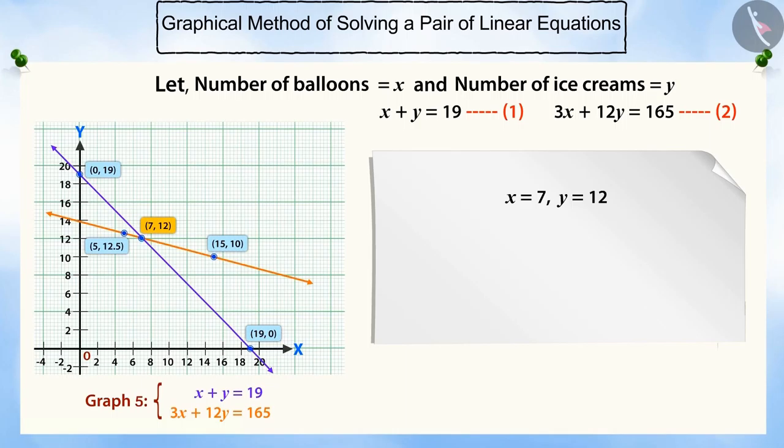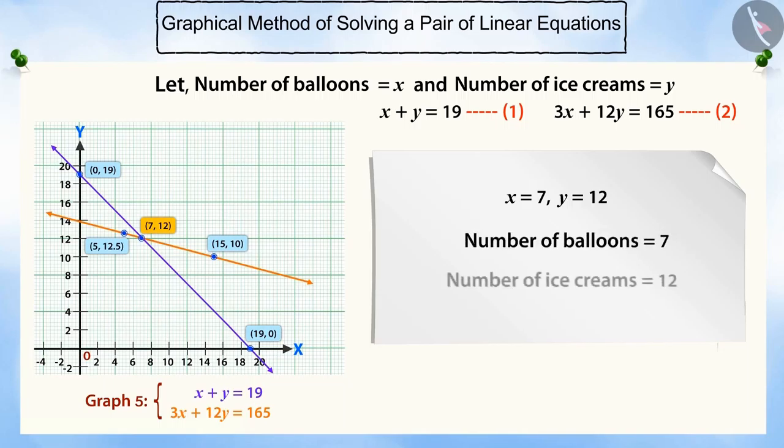Since the point (7, 12) is a common point on both the lines, this is the only solution for the given pair of linear equations in two variables. Therefore, Rahul bought 7 balloons and 12 ice creams.